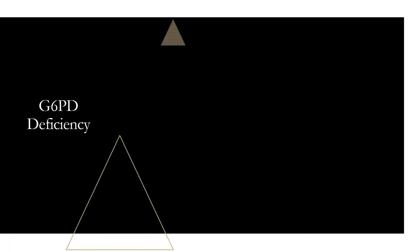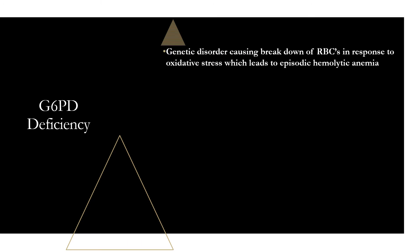Let's get started with G6PD deficiency. This is a genetic disorder that causes breakdown of red blood cells in response to some form of oxidative stress, which we'll go over the causes of, and this is going to lead to episodic hemolytic anemia.